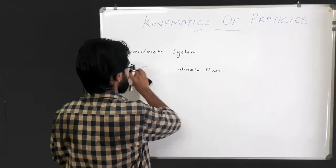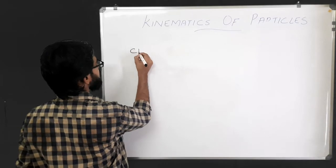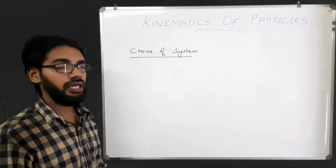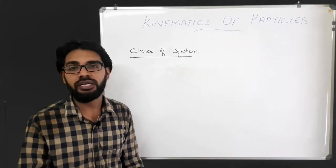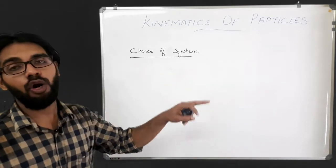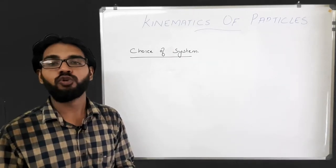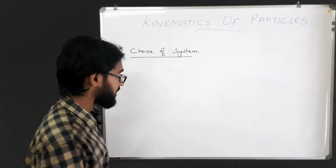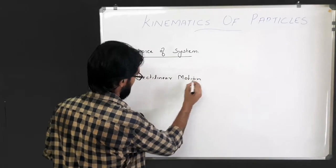Which coordinate system should we choose? The choice of coordinate system is usually based on how the motion is generated or how the data is given. Sometimes the simplicity in solving a problem can vary greatly depending on which coordinate system you choose, so we need to use our engineering judgment. The types of motion discussed earlier are rectilinear motion and curvilinear motion.